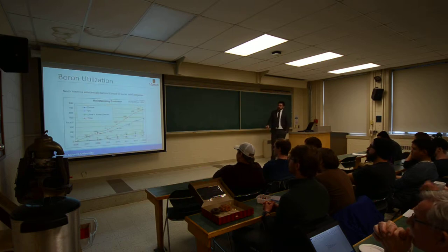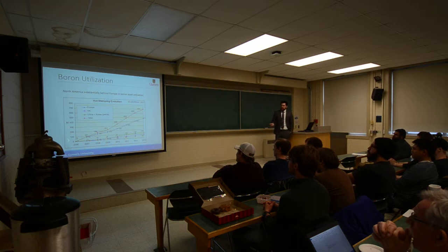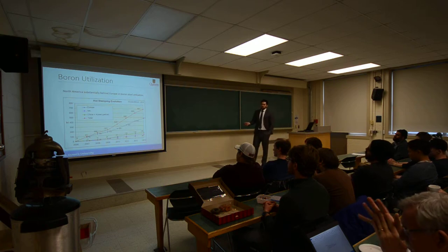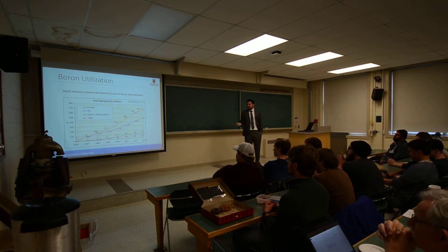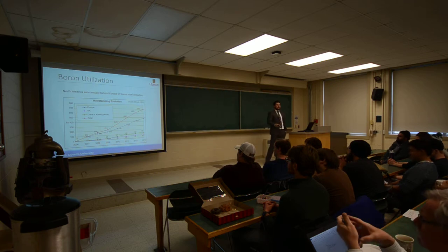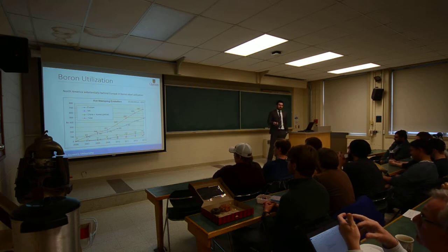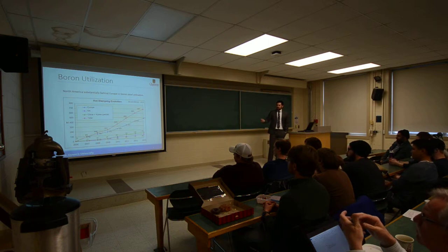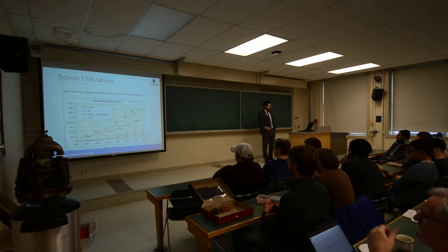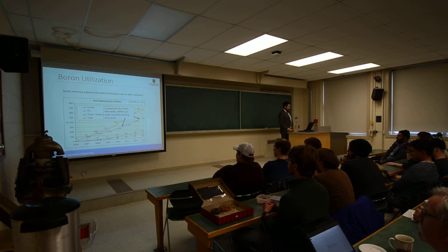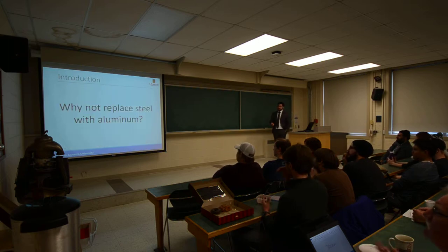This graph shows hot stamping evolution — kilotons of boron steel output in different regions. Around 2006, essentially no one was using boron steel. Around 2007, Europeans started ramping up production, using it in luxury-class automobiles to increase crash worthiness without adding weight. There is a big disparity between European usage and domestic automotive manufacturers' usage, which represents a significant gap we need to address. Companies like Volvo, Mercedes, and BMW are leading this trend.